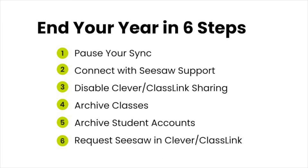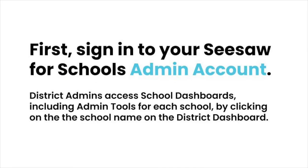The six steps are: pause your sync, connect with Seesaw support, disable sharing, archive classes, archive student accounts, and then request Seesaw in Clever or Classlink. Before we get started, make sure you are signed in to your Seesaw for Schools admin account. If you're a district admin, you'll need to complete the following steps for all schools in your district. Access each school's dashboard by tapping on the school name on your district dashboard.